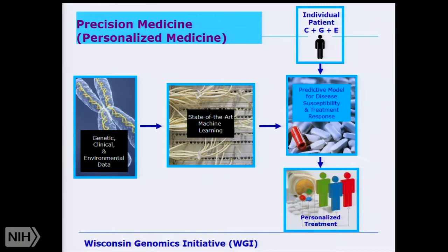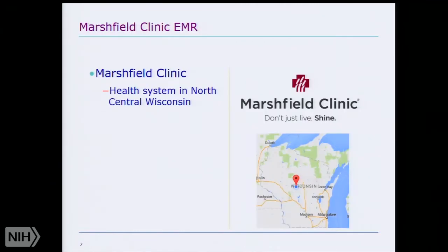Chris Longhurst and collaborators published a nice paper on something they call the green button, where doctors could put in requests and learning algorithms and predictive models could be built on the fly. But today I'm just going to talk about trying to build these sorts of models ahead of time for the kinds of things we might like to predict.